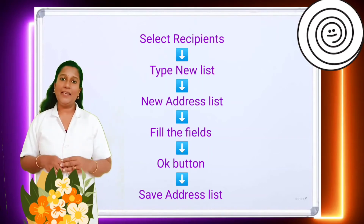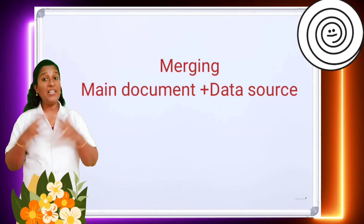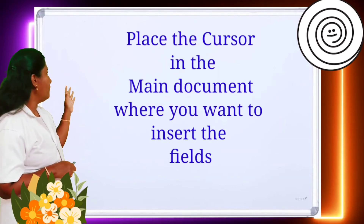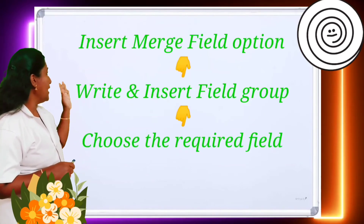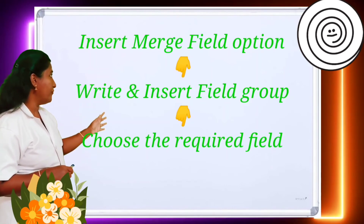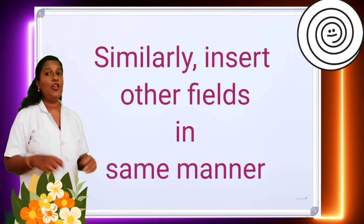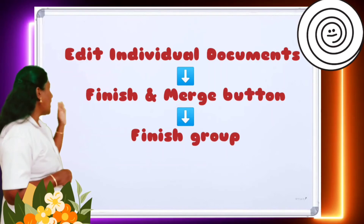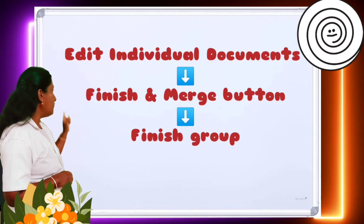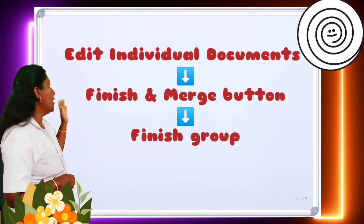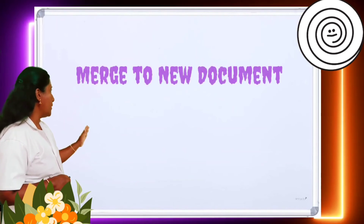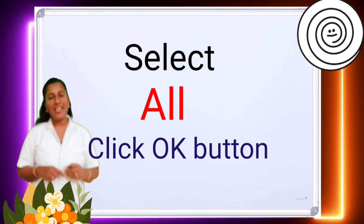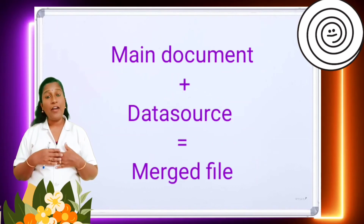This is how you create a data source. Now let us see the steps to merge the main document with the data source. Step 1: place the cursor in the main document where you want to insert the fields. Step 2: click the Insert Merge Field option from the Write and Insert Fields group and choose the required field. You can insert other fields in the same manner. Next, select the Edit Individual Documents option from the Finish and Merge button in the Finish group. A dialog box will appear — select the All option and click OK. Now the main document is merged with the addresses, that is with the data source.